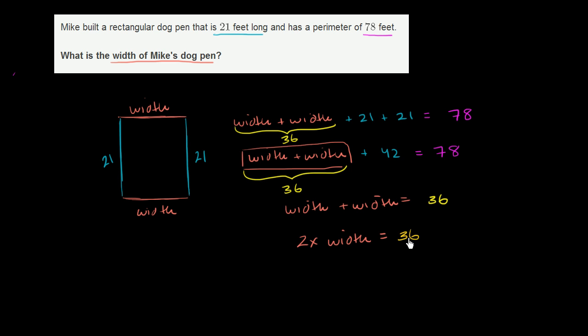And later on, when we learn algebra in a little bit more detail, you'll see that essentially what we're doing is actually algebra. But it just comes out of common sense, out of logic. So if I say two times some value is equal to 36, what is that value going to be?